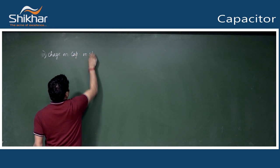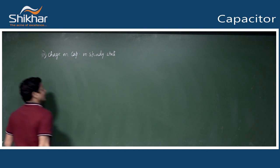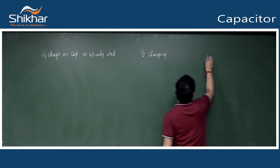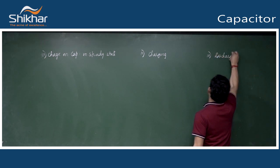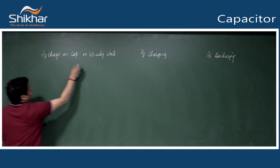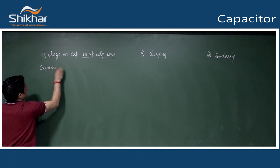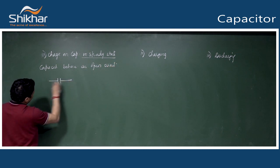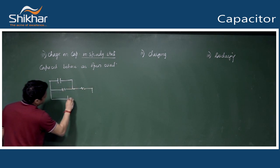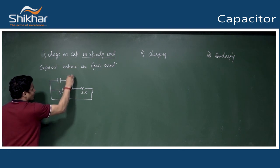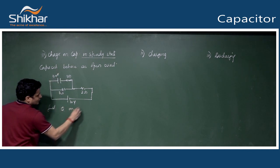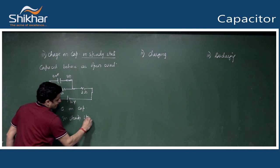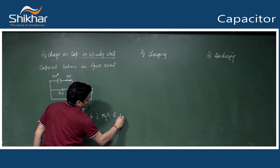Charge on capacitor in steady state (not in NCERT syllabus, but numerical may appear): In steady state, capacitor behaves as open circuit - the branch containing capacitor is open, so current through capacitor is zero.